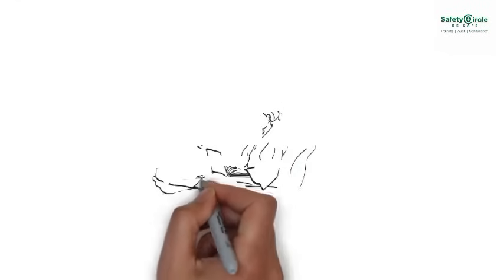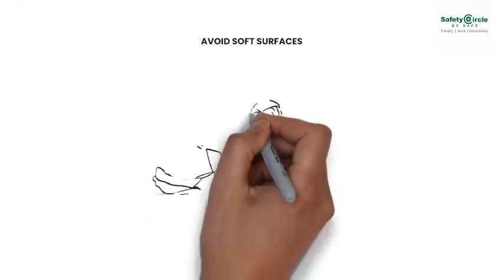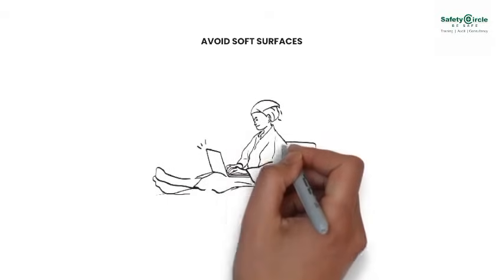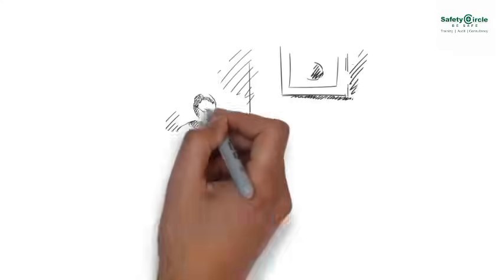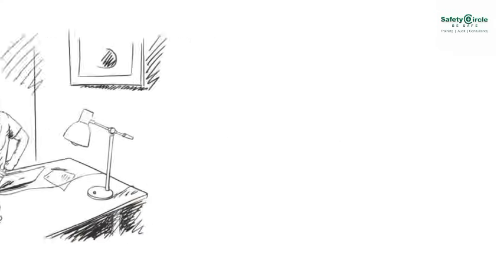Using laptops, tablets, or other electronic devices on soft surfaces like beds or couches can obstruct ventilation, leading to overheating issues. Always place them on hard, flat surfaces for proper airflow.